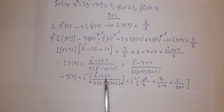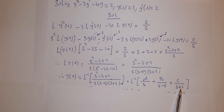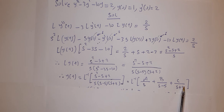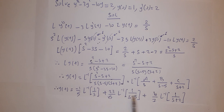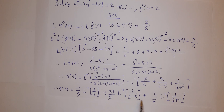We use partial fractions with denominator s(s minus 5)(s plus 2), giving A over s, plus B over (s minus 5), plus C over (s plus 2). Please try to work out the partial fractions yourself. We get A equals negative 1 over 5, B equals 22 over 35, and C equals 4 over 7.